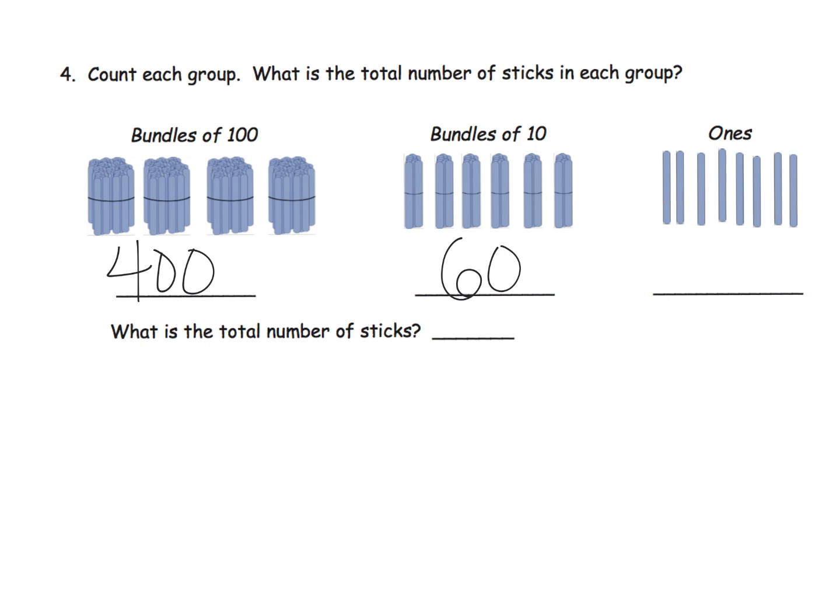And then way over here, we've got a bunch of little ones. They're not bundles anymore. They're just units. They're individual popsicle sticks. And we have one, two, three, four, five, six, seven, eight. So we have eight. So we have 400 plus 60 plus eight. And if we want to write down what is the total number of sticks, I'm going to write it down here. We would say it like this, 468.